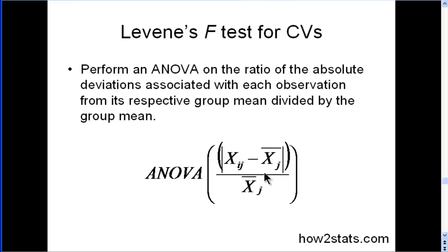If you're not familiar with Levene's F-test, I have another video on homogeneity of variances where I go into more detail, and also a video on testing Levene's F-test in ANOVA. This is what a lot of people use to test differences between coefficients of variation in a statistically significant way — they basically do a Levene's test, which is an ANOVA on the scores obtained for each person in the sample.